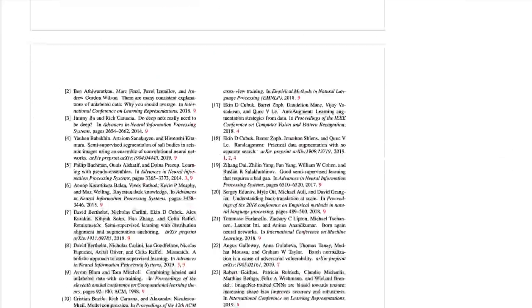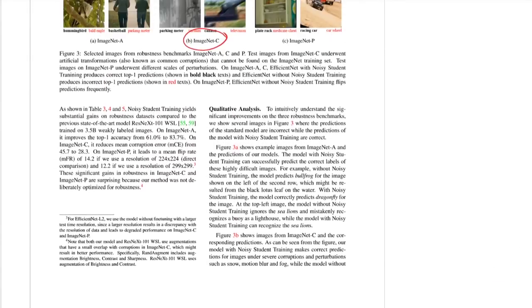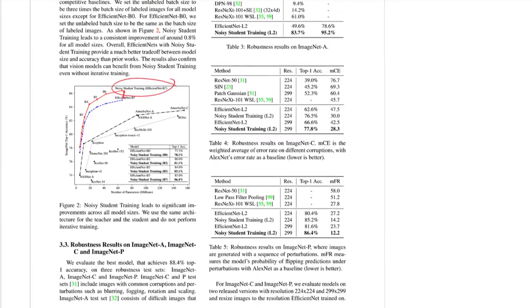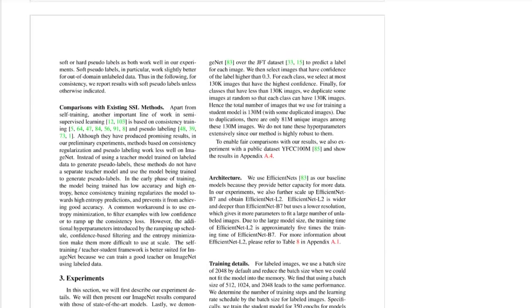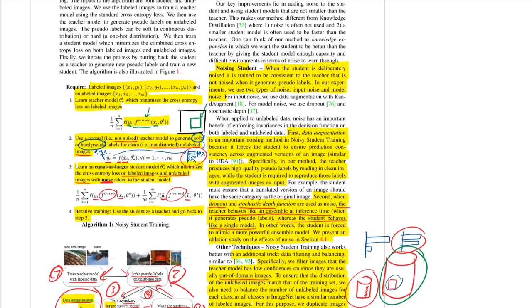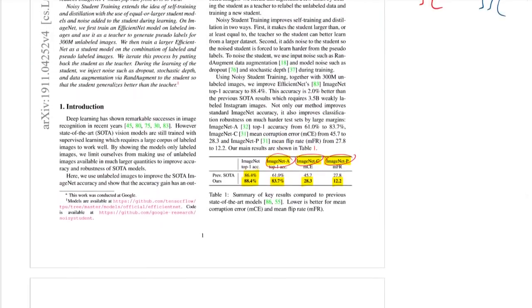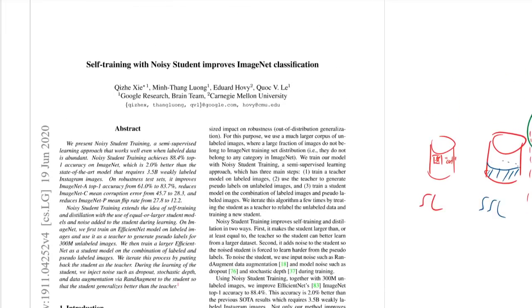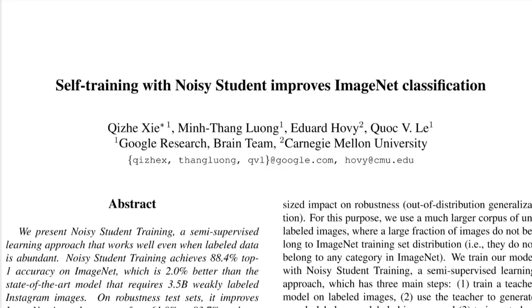This is the type of research where larger labs bring value because they have the resources to do all these ablations across different models and giant datasets. It's a fairly thorough paper investigating which parts of the pipeline contribute. Pipelines with many tricks can be criticized because it's hard to pinpoint where improvements come from, but they mitigate that by doing comprehensive ablations showing each component matters. That was my two cents on this paper — I hope you enjoyed it.